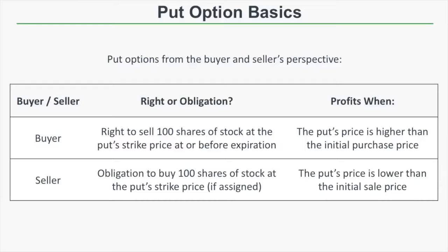From the seller's perspective, a put option represents the obligation to buy 100 shares of stock at the put strike price if they are assigned. A put seller profits when the put's value drops to a price lower than what they sold it for. If a put seller sells a put for $20 — a $2,000 credit — and the put falls to $15, it's now worth $1,500. Buying it back for $1,500 when they sold it for $2,000 locks in a $500 profit.